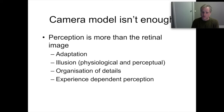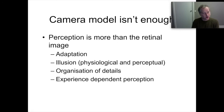Perception is more than just the retinal image. It has elements of adaptation; we can describe illusions as departures from the physical world; we can think about how perception organizes details; and we can consider how perception might be experience-dependent as well. Let's take a look at each of those in turn.